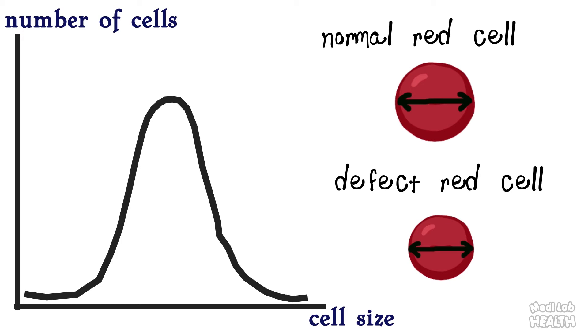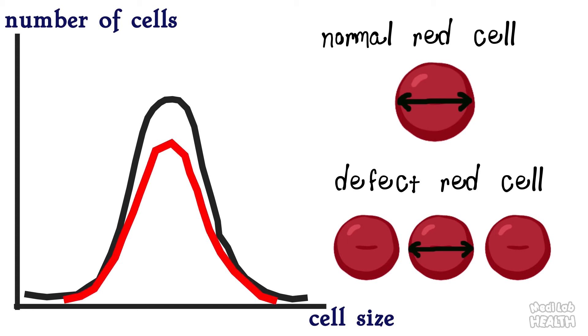But the RDW value is normal. Although the red cells are smaller than usual, all the red cells are the same in size, or there is virtually no variation among the red blood cells in the sample. Therefore, the red cell distribution width is recorded as normal.